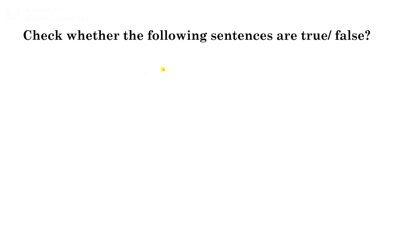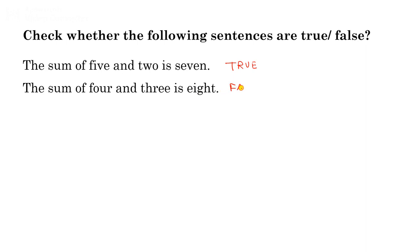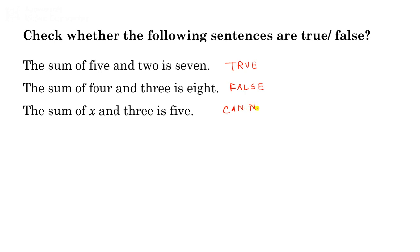Before defining propositional logic, let us go through some examples. I will show some sentences and we have to check whether the sentences are true or false. The first sentence: 'The sum of 5 and 2 is 7' — you know this is true. Another sentence: 'The sum of 4 and 3 is 8' — the actual sum is 7, so this sentence is false. Now consider: 'The sum of x and 3 is 5.' Since x is not defined, we cannot say whether this sentence is true or false.